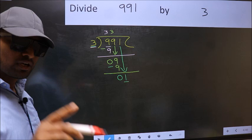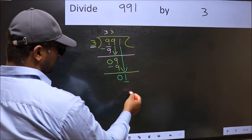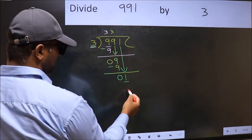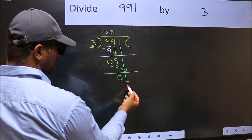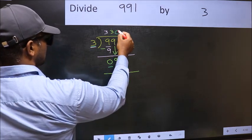Instead, what you should think of doing is, what number should be right here? If I take 1 here, I will get 3. But 3 is larger than 1. So what we should do is, we should take 0.